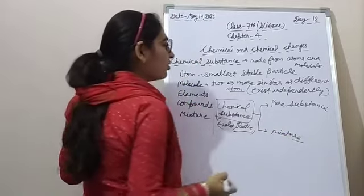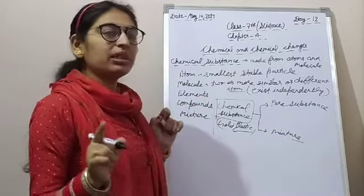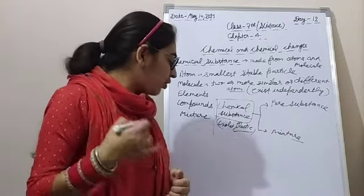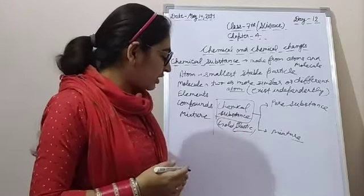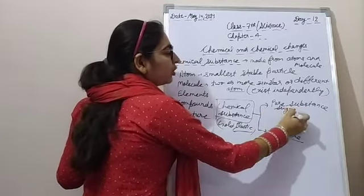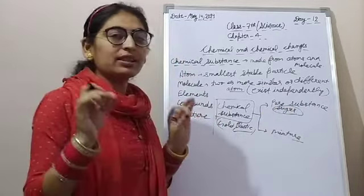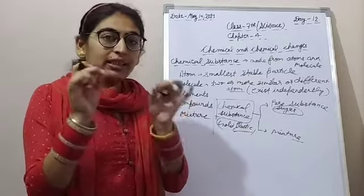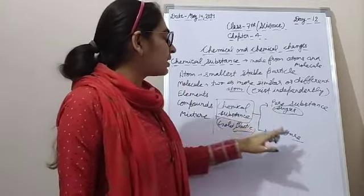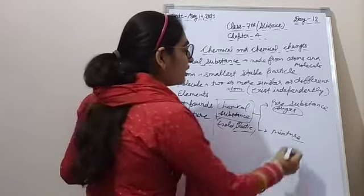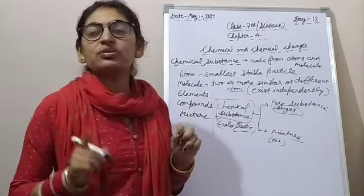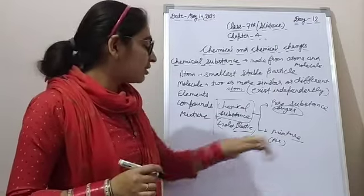Chemical substance jo atom ya molecule se milke bante hain, unme se kuch pure substance ho sakti hai aur kuch mixture. Jaisa sugar hai — sugar ke andar sirf sugar ke hi kaney honge, iske alawa kuch aur nahi hoga. Toh woh pure substance hai. Lekin mixture me kya hota hai? Jaisi air hai — air is a mixture of gases. That is a mixture.